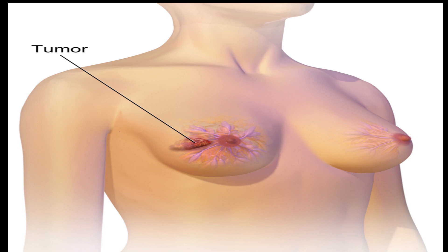1. Understanding breast cancer. Breast cancer is a type of cancer that forms in the cells of the breast. It occurs when the normal, healthy cells in the breast undergo genetic changes and start to grow and divide uncontrollably. Over time, these abnormal cells can form a tumor or mass within the breast tissue.